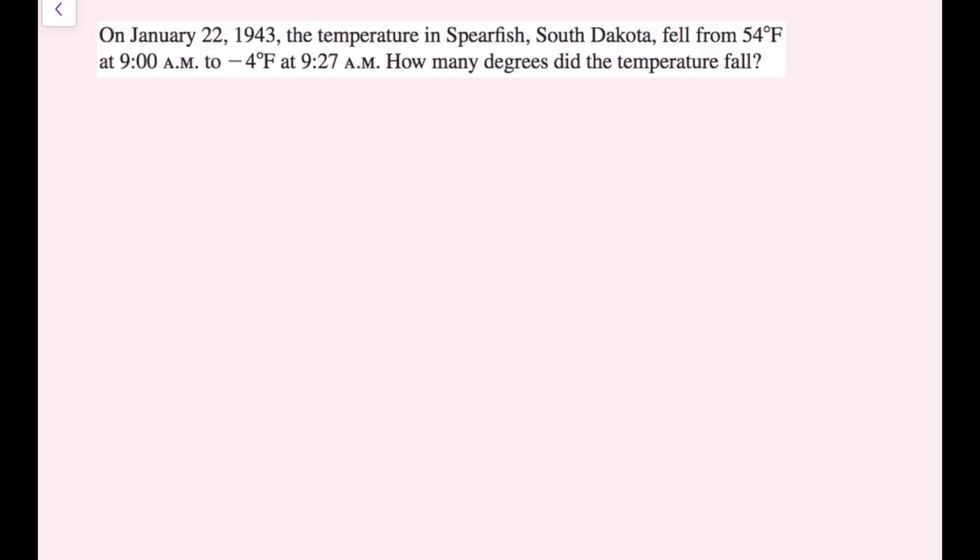On January 22nd, 1943, the temperature in Spearfish, South Dakota fell from 54 degrees Fahrenheit at 9 a.m. to negative four degrees Fahrenheit at 9:27 a.m. How many degrees did the temperature fall? So I know my final temperature is negative four degrees. And if I add the amount of temperature that the temperature fell, I will get back to my original temperature, which is 54. So I'm going to call this x. So negative four plus x equals 54 degrees.